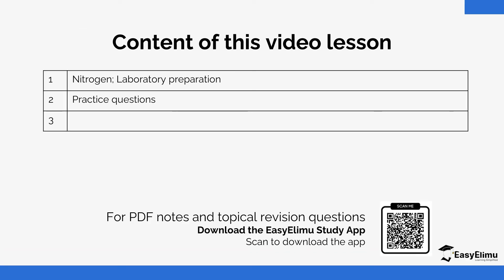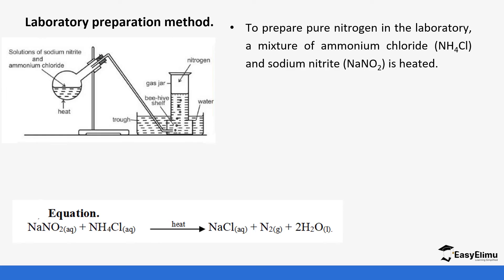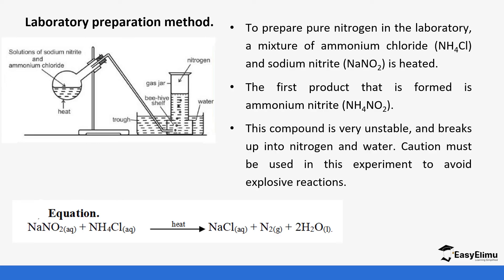In the laboratory, we'll also look at the properties. First, nitrogen is prepared by the reaction of sodium nitrite and ammonium chloride. This mixture is heated and it produces sodium chloride, and the ammonium nitrate that is produced decomposes to form nitrogen and water. To prepare pure nitrogen in the lab, a mixture of ammonium chloride and sodium nitrite is heated. The first product that is formed is ammonium nitrite, so what happens is an interchange of ions in the first step where sodium nitrite reacts with ammonium chloride to form ammonium nitrite and sodium chloride.